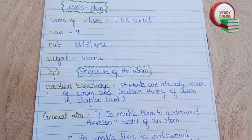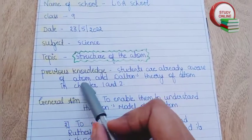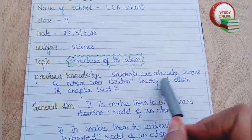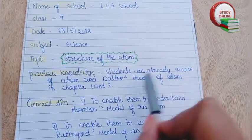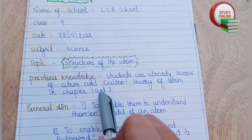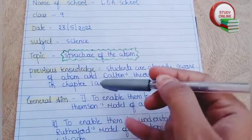Here you can see previous knowledge, so students are already aware of atoms and Dalton's theory of atoms in chapters 1 and 2. The chapter 1 and 2 lesson plans, please check in the description box.